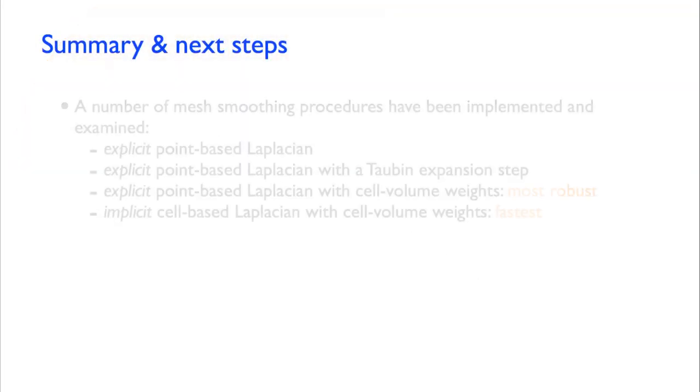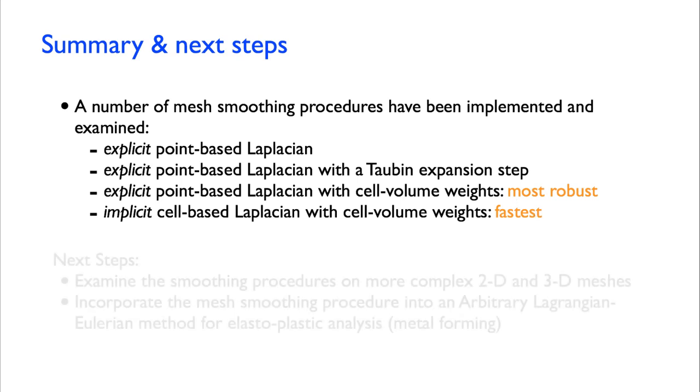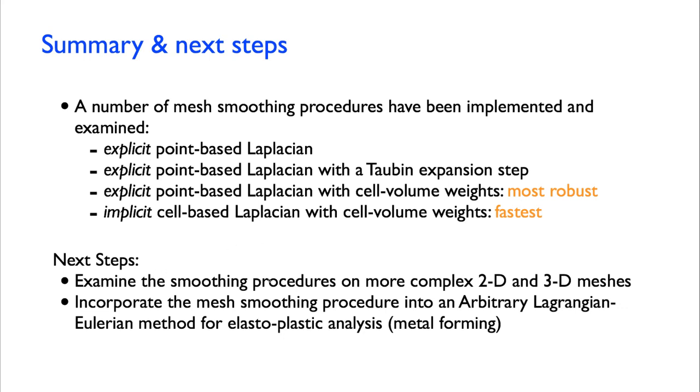To summarize, I examined a number of explicit Laplacian-based smoothing methods and also an implicit cell-based Laplacian smoothing method. The explicit point-based Laplacian with cell weights seems to be the most robust. It seems to work really well. Whereas the implicit method is obviously faster. So if we could combine these in some way, it seems like the best approach. The next steps then will be to try the smoothing method on more complex 2D and 3D meshes and then incorporate it as a component into an ALE solver for metal forming.